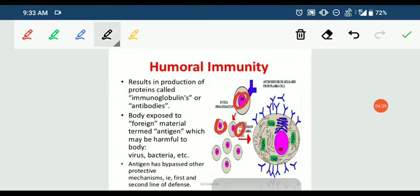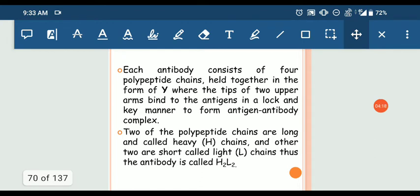These B lymphocytes produce this type of protein which we call antibodies. These antibodies attack the bacteria in four different ways and help us to kill them.